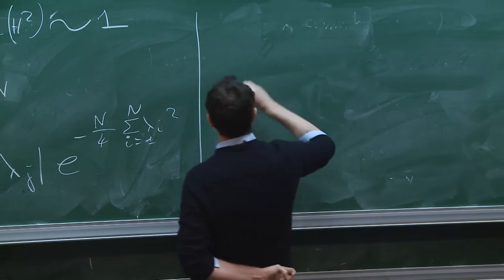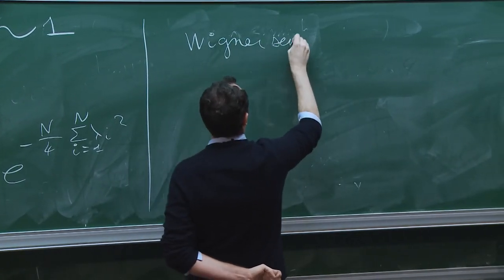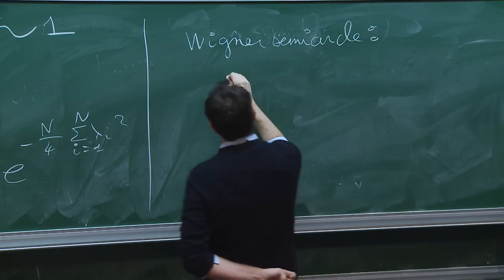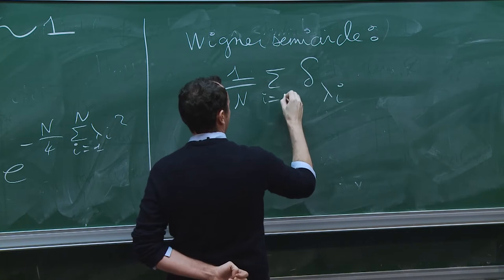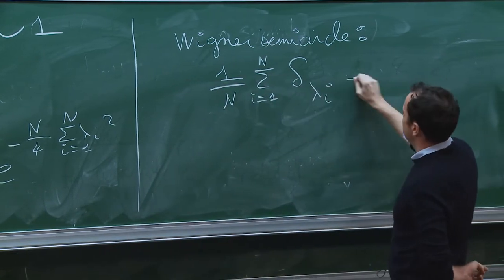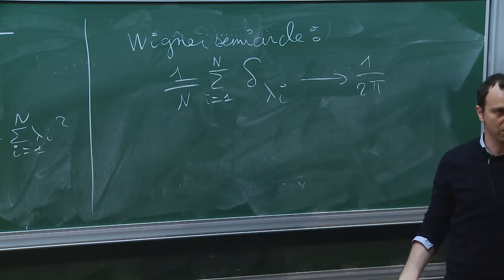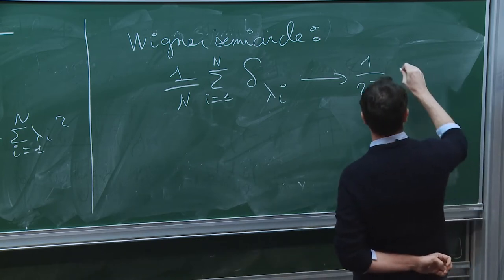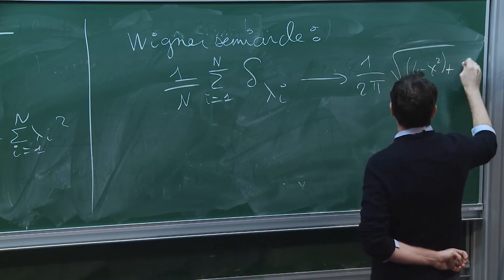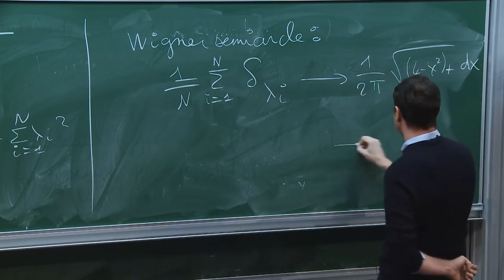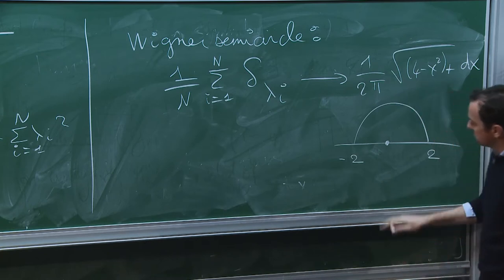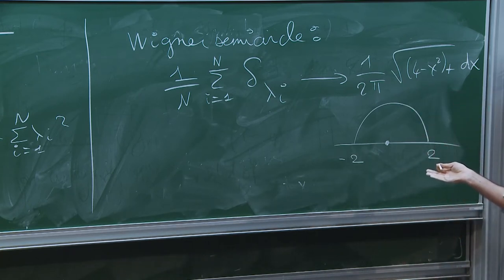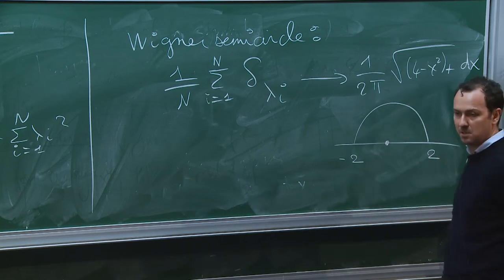Balint told you that you have the Wigner semicircle law: the rescaled eigenvalue empirical spectral measure converges to the projection of the uniform measure on the unit disk on the line, which is (1/2π)√(4 - x²). Typically if you make a histogram of the eigenvalues of a very large matrix — actually just do a simulation of 20×20 or something — you will see that it converges to this type of shape.